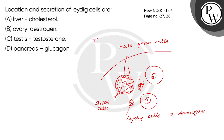So the location is the testis — we have made this section of the testis. In this section there are 1 to 3 seminiferous tubules per testicular lobule. In the interstitial space between the seminiferous tubules, there are some other cells — the Leydig cells — which are responsible for releasing androgens.